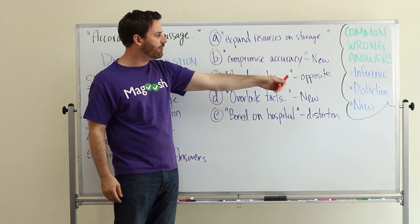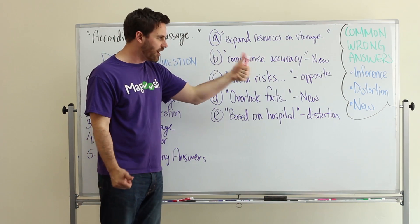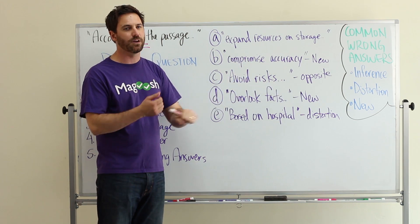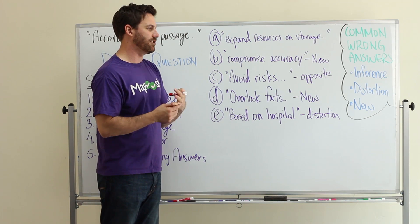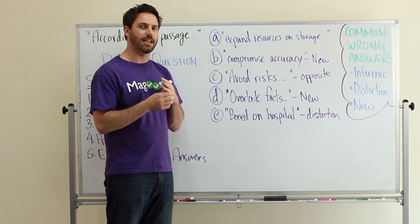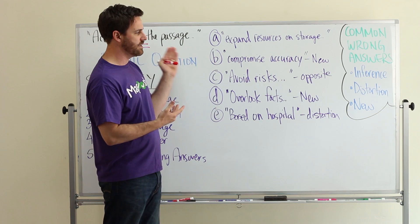So you're going to next eliminate wrong answers. And for detailed questions, there's some common wrong answers to look out for. First off, inferences - anytime you see an inference where it's information that isn't explicitly stated in the passage, that's going to be wrong for a detailed question.